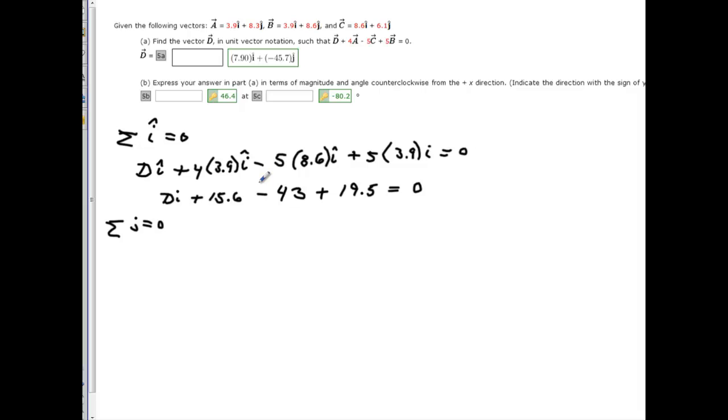Now I'll just solve for this. So, I get 15.6 minus 43 plus 19.5. That gives me a value of negative 7.9. So, D I must equal to 7.9 I hat.